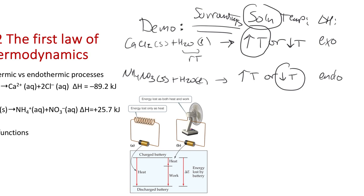The temperature for the ammonium nitrate is already going back up. The calcium chloride peaked out around 50 degrees or so and is already starting to drop. Obviously we increased the temperature, then the reaction completed, and we're just going back towards room temperature.